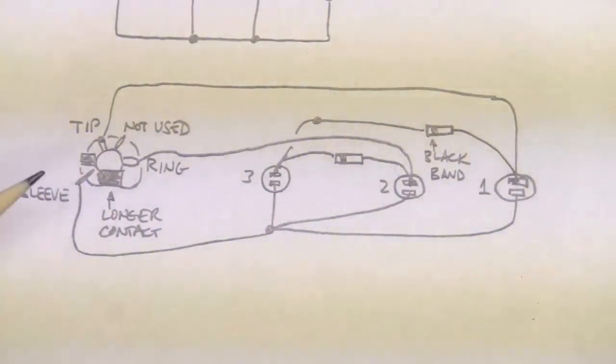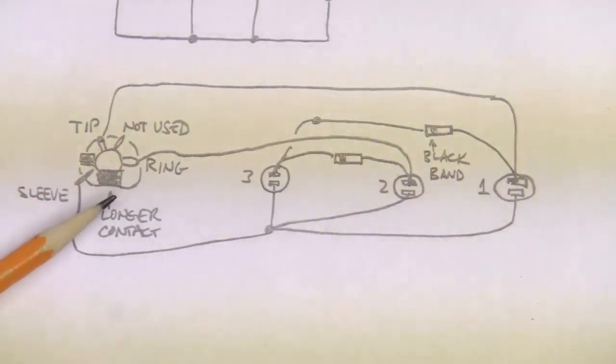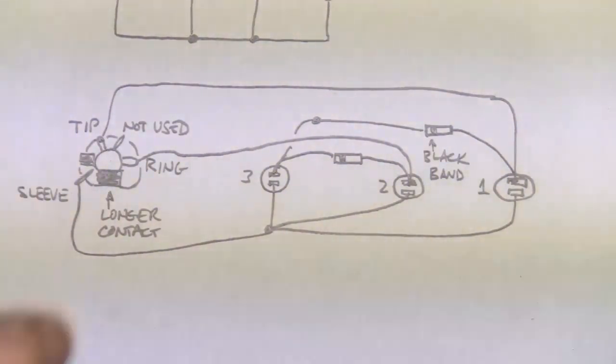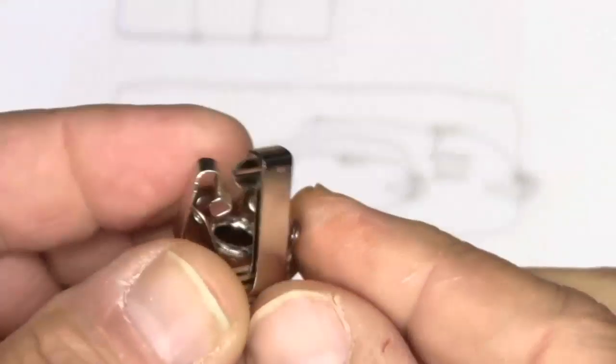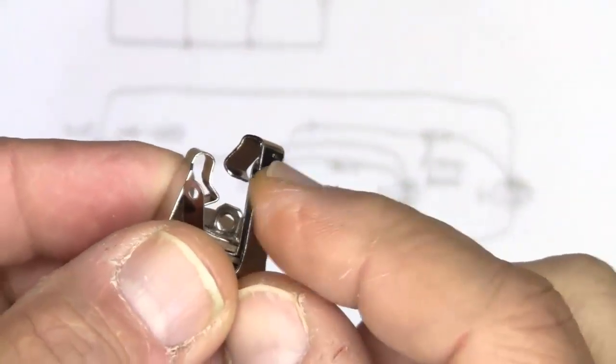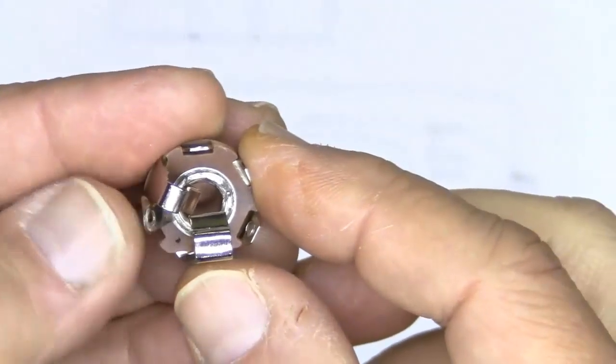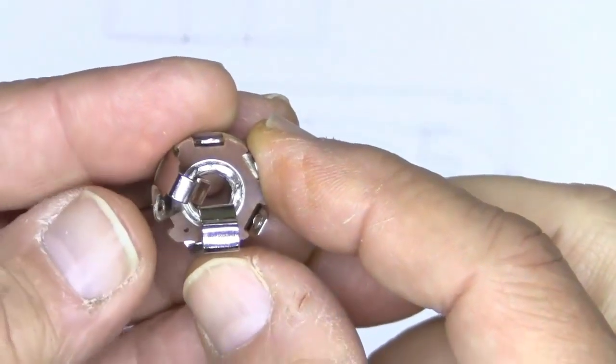And you notice this TRS jack has a long contact and a short contact. Here's the long contact and here's the short contact. And when you look at the sideways, you can see that's longer than that.